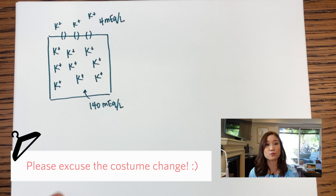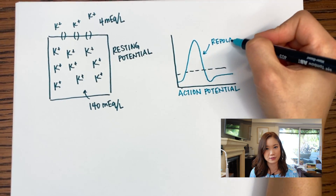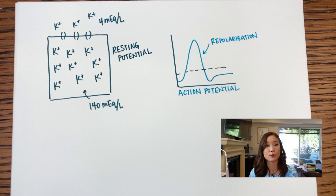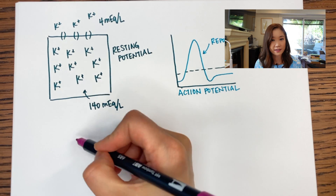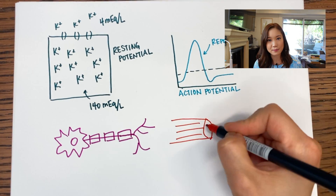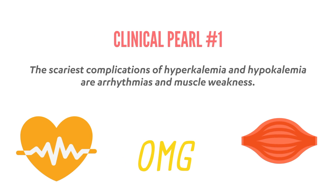Potassium is one of those really important ions that plays a large role in determining the cell membrane's resting potential, and it plays a huge role in action potentials as well, specifically in the repolarization phase. Action potentials are super important because that's how signals travel throughout the body — for example, down nerve fibers, muscle fibers, and the cardiac conduction system. So this brings us to clinical problem number one: since messing with potassium messes with your action potentials, including in the heart and the muscles, it makes sense that the scariest complications of hyperkalemia and hypokalemia are arrhythmias and muscle weakness.